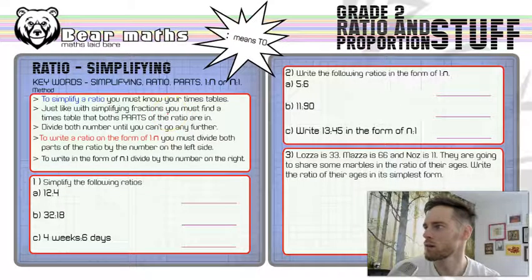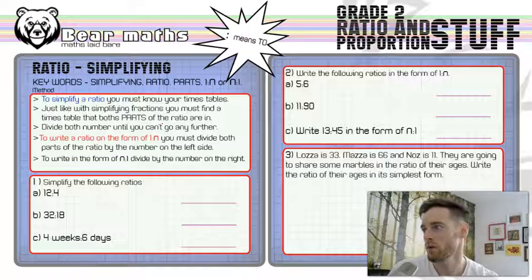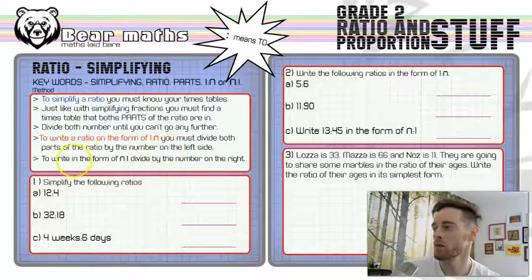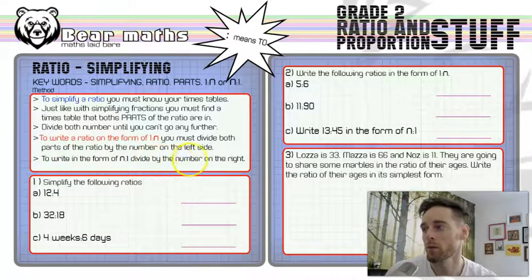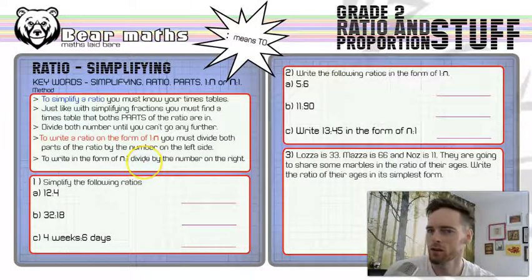To simplify a ratio you must know your times tables. Just like with simplifying fractions, you must find a times table that both parts of the ratio are in, then divide both numbers until you can't go any further. To write a ratio in the form one to n, divide both parts by the number on the left. To write it as n to one, divide both numbers by the number on the right. If you're good at simplifying fractions you'll be good at simplifying ratios — it's the same skill, just dividing.